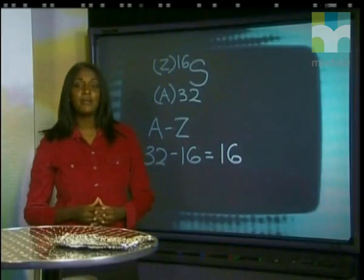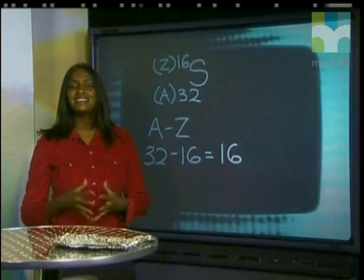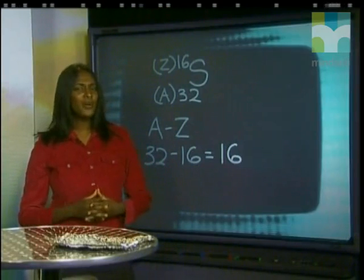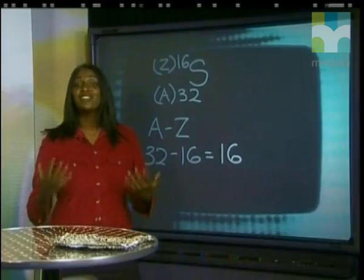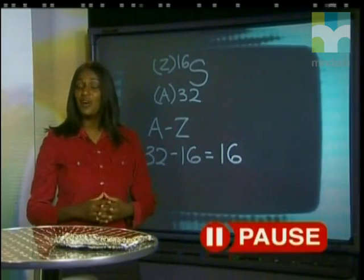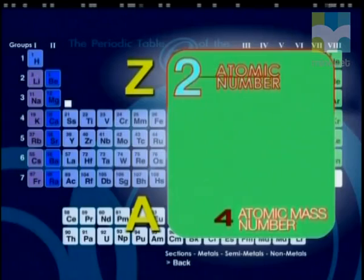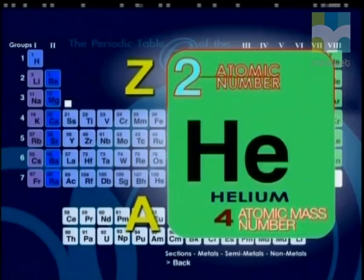Do you remember that Rutherford used alpha particles in his experiment? With all the information we have discovered today, can you figure out what an alpha particle is? Here are some clues: the alpha particle has an atomic mass number of 4 and an atomic number of 2. The alpha particle is, in fact, a helium nucleus.